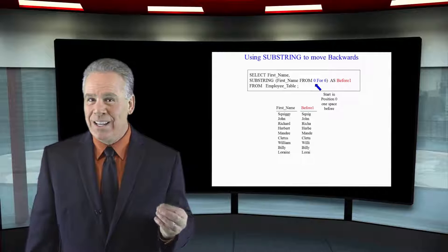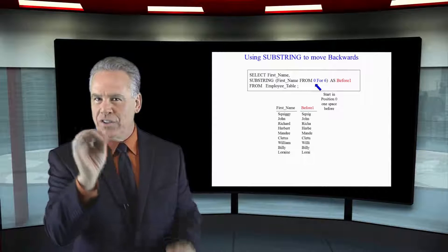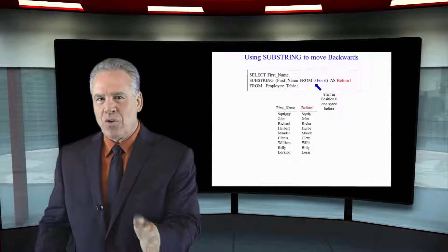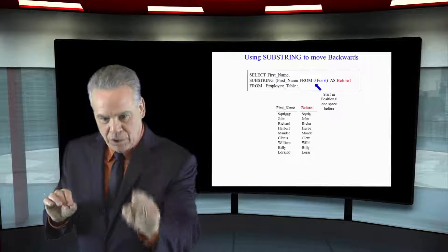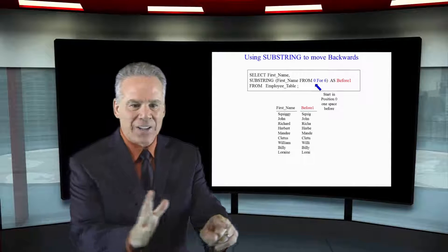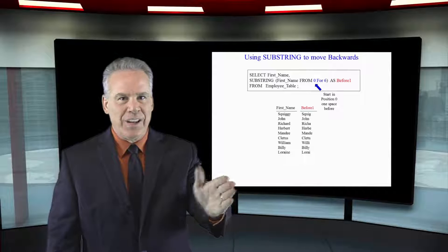This is that weird part where you say, why would I ever do this? It's to prove a point about substring. I'm going to select first name, substring first name from zero for six. The first position is always one, so when you go zero, it actually moves one to the left — into outer space, there's nothing there. So saying zero for six is exactly like saying one for five, except there's a space in front. You can start at position one, two, three, or go in the opposite direction — in a substring, you can move right or left. It goes both ways.